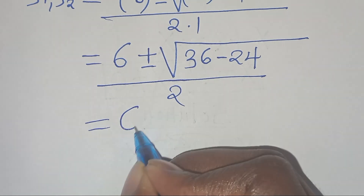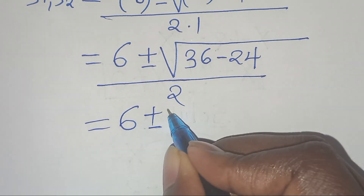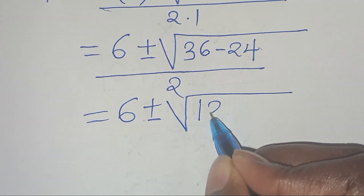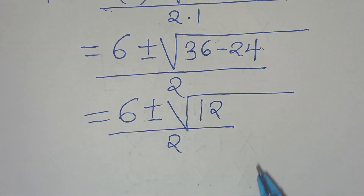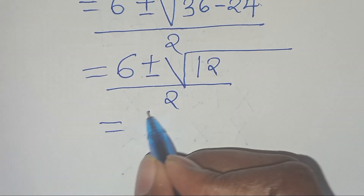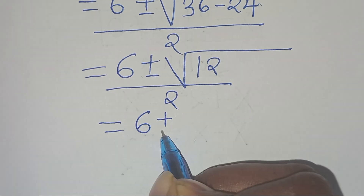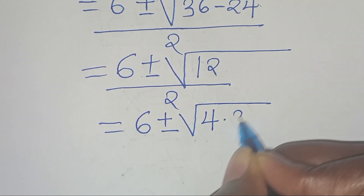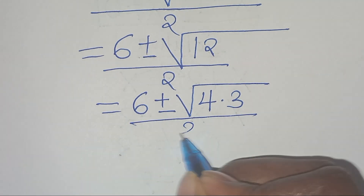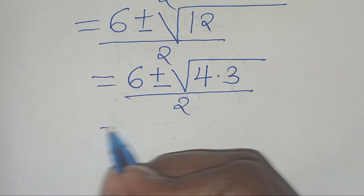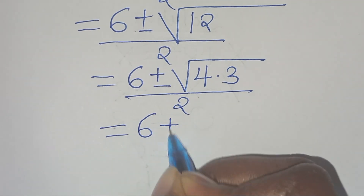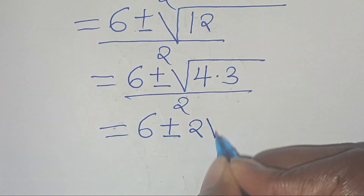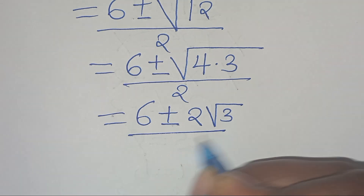So we have 6 plus or minus the square root of 36 minus 24, which is 12, all divided by 2. We can express 12 as 4 times 3, so we have 6 plus or minus the square root of 4 times 3, all divided by 2. The square root of 4 is 2, so this becomes 6 plus or minus 2 times the square root of 3, all divided by 2.